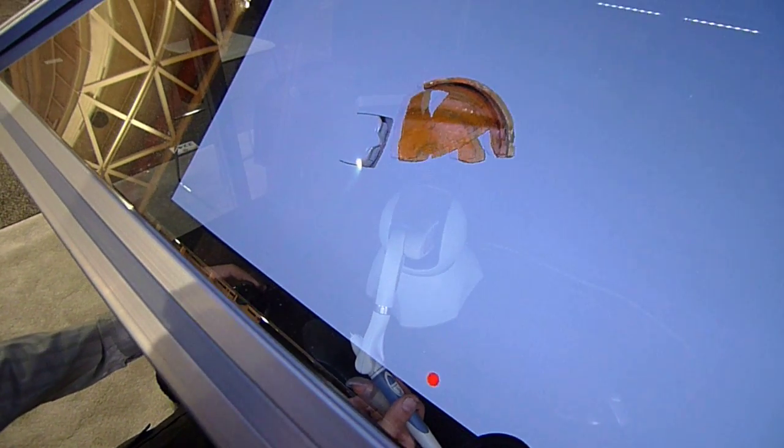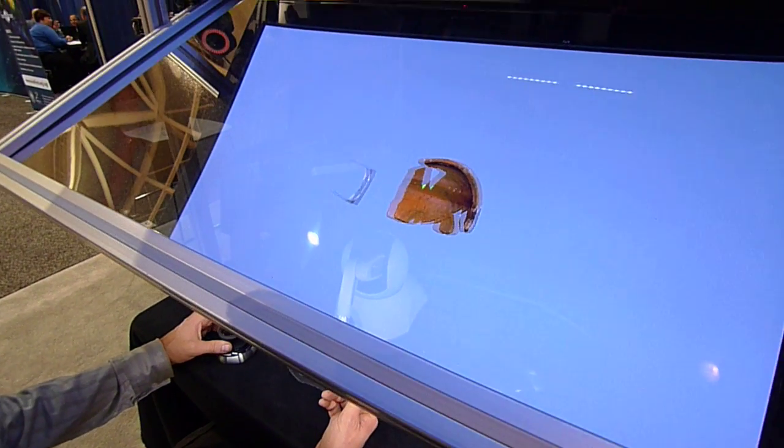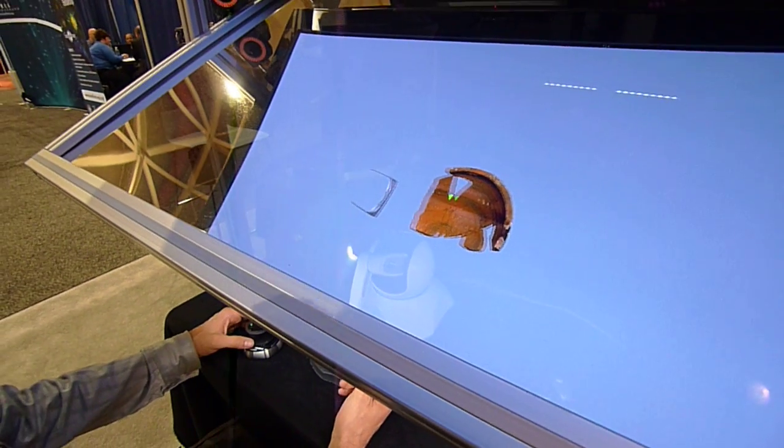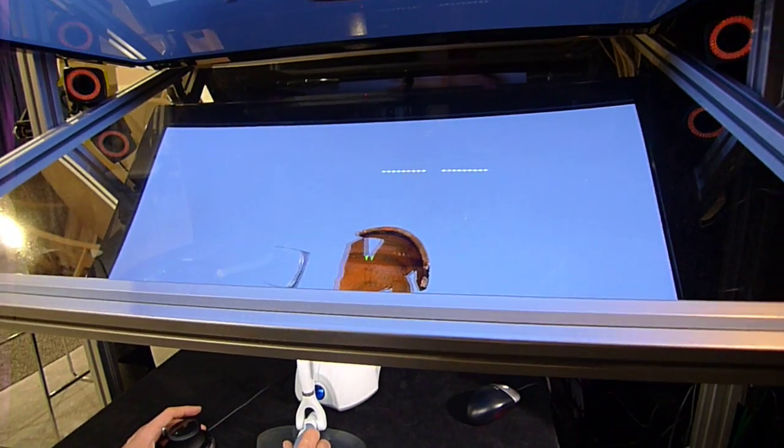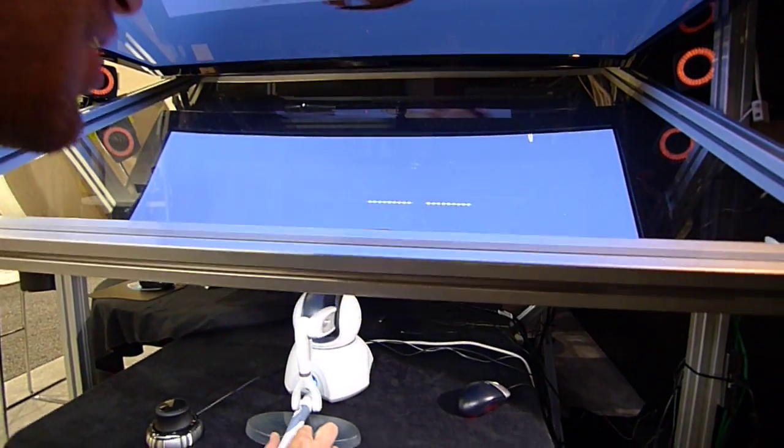As you can see, we also have another pair of glasses in that environment that have a little yellow ball. That's another Hover unit that's on the other side of this table. Let's go over there and check it out.